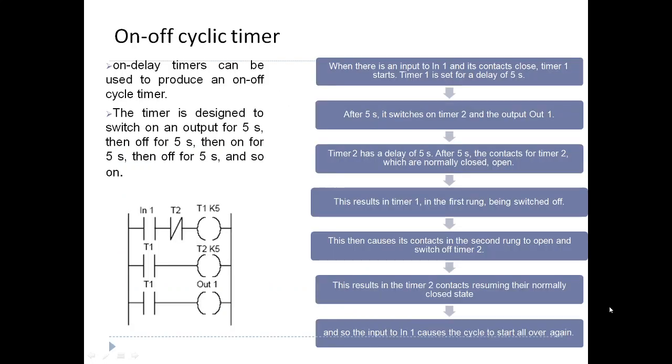On-off cyclic timer. When there is an input 1 and the contacts close, the delay for 5 seconds is set. On-delay timers can be used to produce an on-off cycle timer. The timer is designed to switch an output for 5 seconds, then off for 5 seconds, then on for 5 seconds, and off for 5 seconds, and so on. This is a cyclic timer.